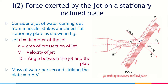We have a jet of water coming from a nozzle striking a flat inclined plate. V is the velocity in the x-direction, d is the diameter of the jet, A is the area of cross-section which is π/4 × d², and theta is the angle between the jet and the plate. The mass of water striking per second is ρAV — density is mass per volume, so mass equals density times volume, and volume equals area times length; dividing both sides by time gives mass per second equal to ρAV.